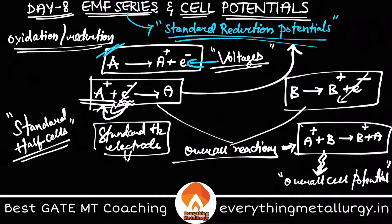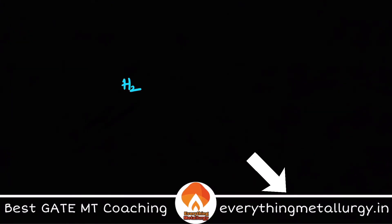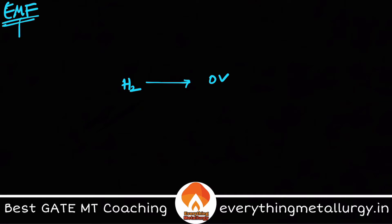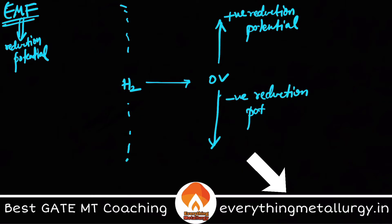The standard hydrogen electrode has zero volts and is used as the reference. All these standard half cells are connected to this reference electrode for measurement. Remember, all these are reduction reactions, so the EMF series is built using reduction potentials only. Hydrogen is at zero volts, and above it we have positive reduction potentials.